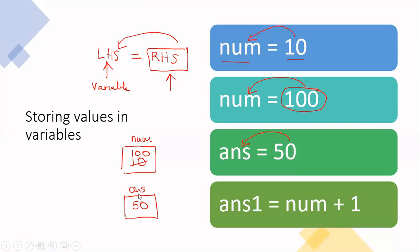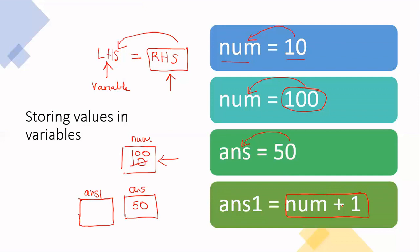So if we draw another placeholder, this will be called ants1. What are we putting into ants1? We are taking the value of num — and if I go to my num placeholder, num has the value 100 — and then I add 1 to it. So it's 100 plus 1, giving me 101. That value is now stored in the ants1 variable, the placeholder called ants1.